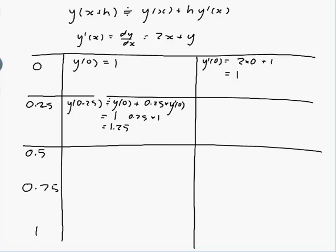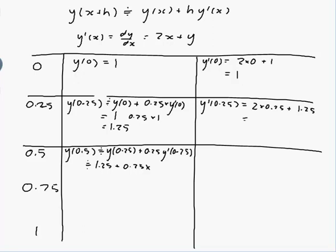So next I'd want the value of y of 0.5, so y of 0.5 would be approximately equal to y of the previous step, which is 0.25, plus h, which is 0.25, times y dashed of the previous step, which is 0.25. So that's approximately equal to, so y of 0.25 was 1.25, y dashed of 0.25, I don't have that yet. y dashed of 0.25 is equal to 2 times x, and x is 0.25, plus y, and y would be y of 0.25, which is 1.25, from the left-hand column. So that works out to be 1.75. So this is 1.75, and this works out to be 1.6875.